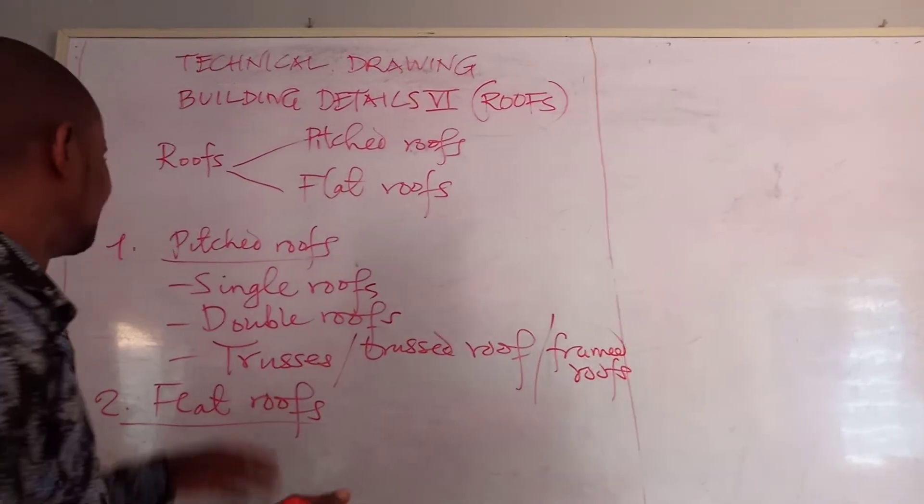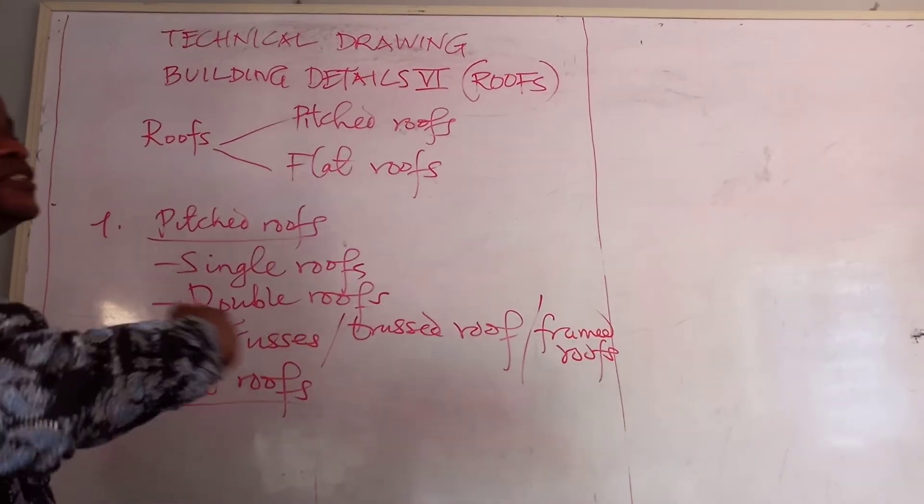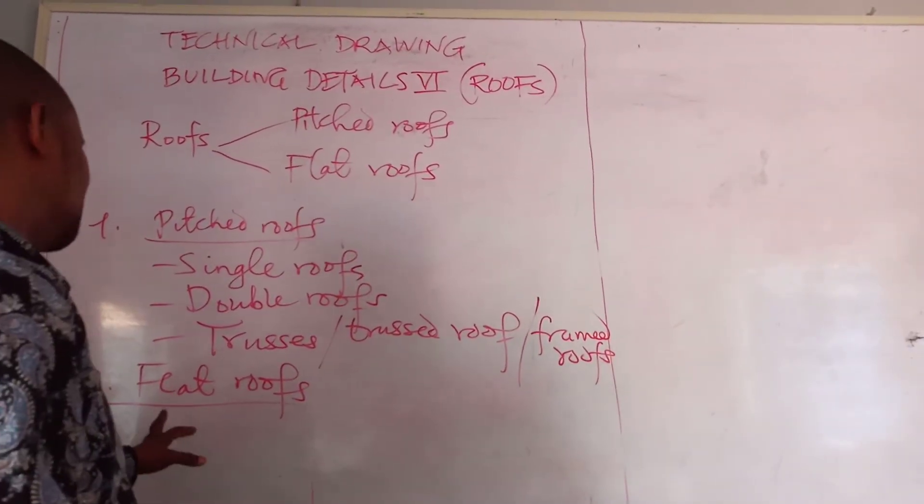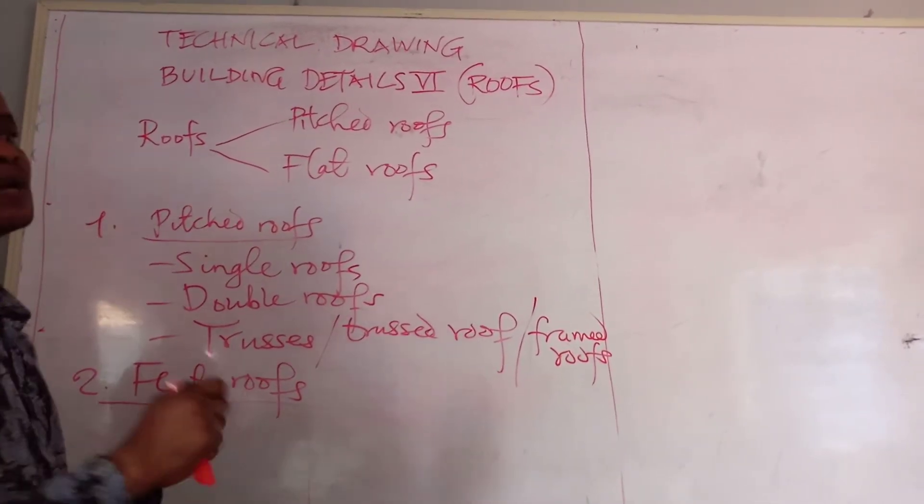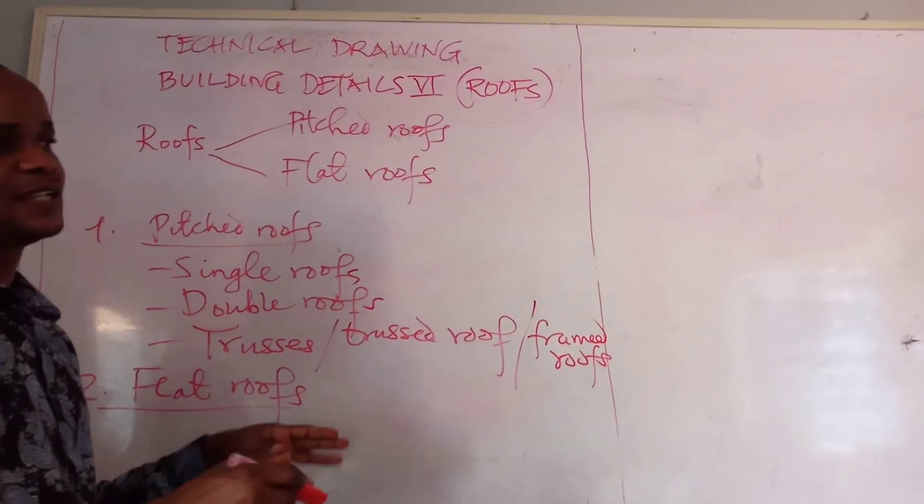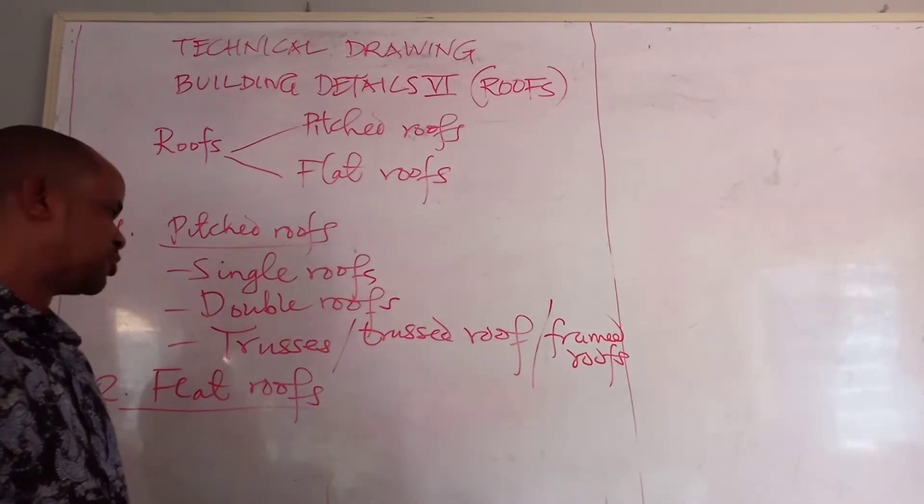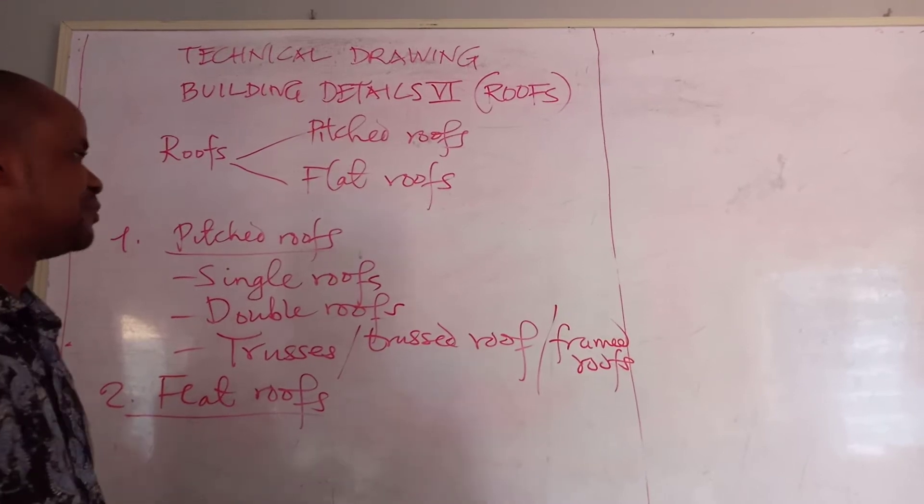But pitched roof can have 15 degrees, can have more than that to come in place. But under the flat roof, the practicable example that we talk about is the concrete roof, the one people used to call their king in the local language.